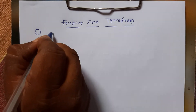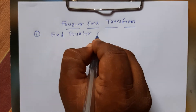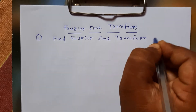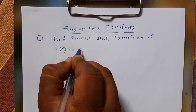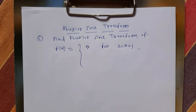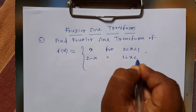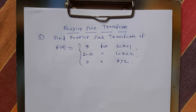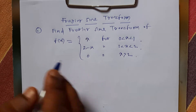So we'll take one example here. Find the Fourier Sine Transform of f(x), where f(x) equals ax for x between 0 and 1, (2 minus ax) for x between 1 and 2, and 0 for x greater than 2. So in this example the function is divided into three different ranges.